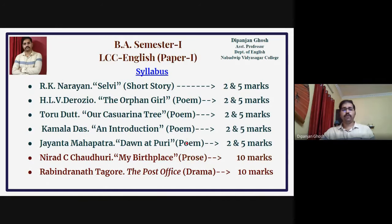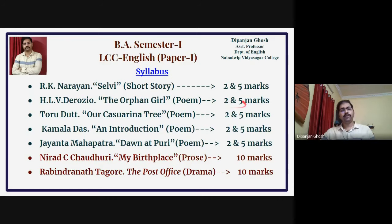There are 4 poems. The first poem is H.L.V. Derozio's 'The Orphan Girl.'